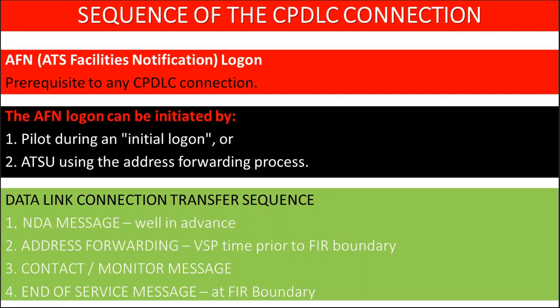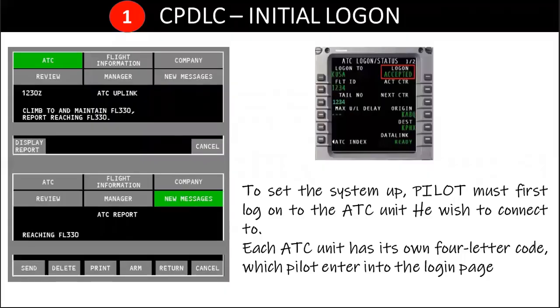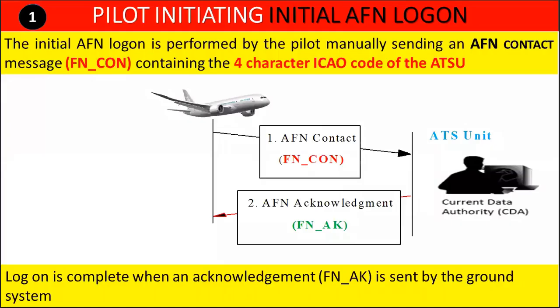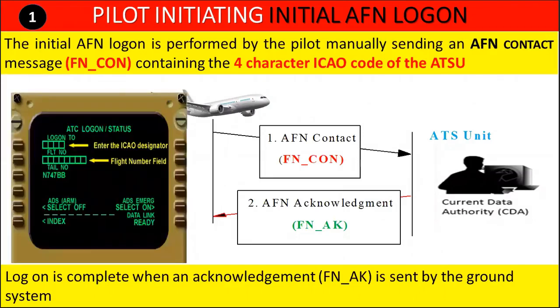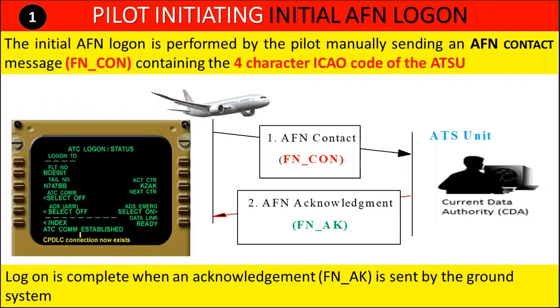Once the initial logon is established, the data link transfer sequence will include: 1. Next data authority message, 2. Address forwarding message, 3. Contact or monitor message, 4. End of service message. To set the system up, the pilot must first log on to the air traffic service unit. Each ATC unit has its own four-letter code, which the pilot enters into the login page. The initial AFN logon is performed by the pilot manually sending an AFN contact message containing the four-character ICAO code of the ATS unit. An initial AFN logon is required when the aircraft does not already have a CPDLC connection — such as when preparing to depart from an airport — or when entering a CPDLC area from an area where CPDLC services have not been provided. Logon is complete when an acknowledgement is sent by the ground system.